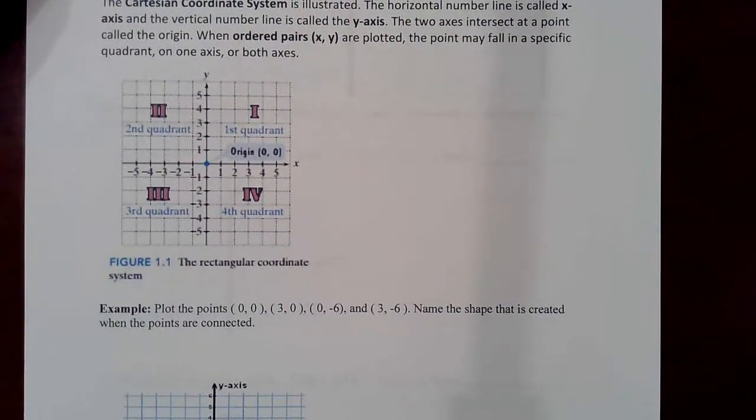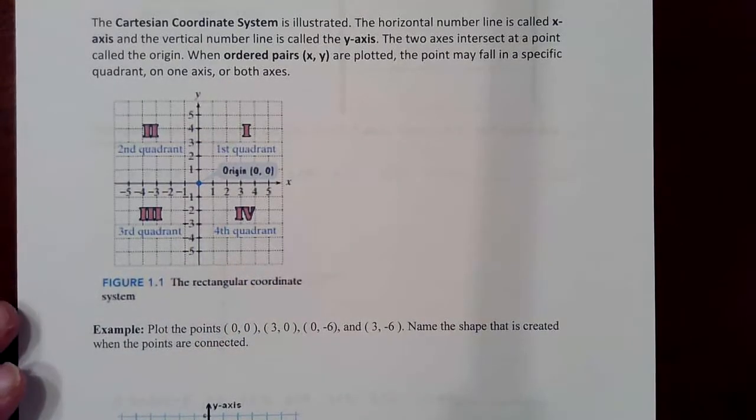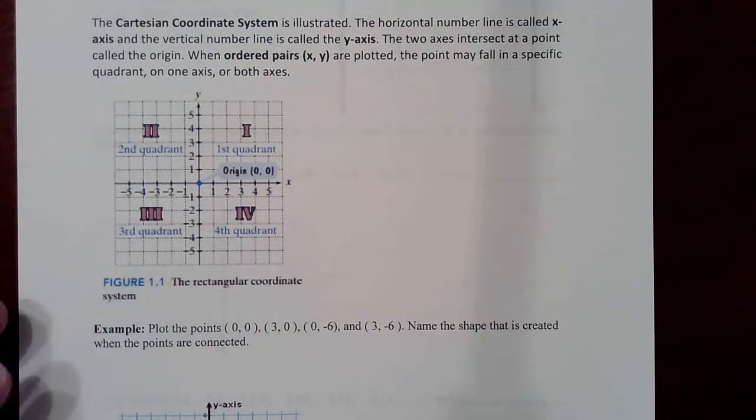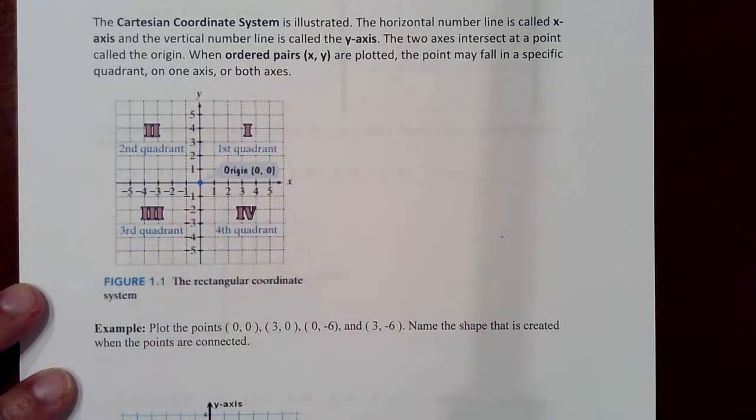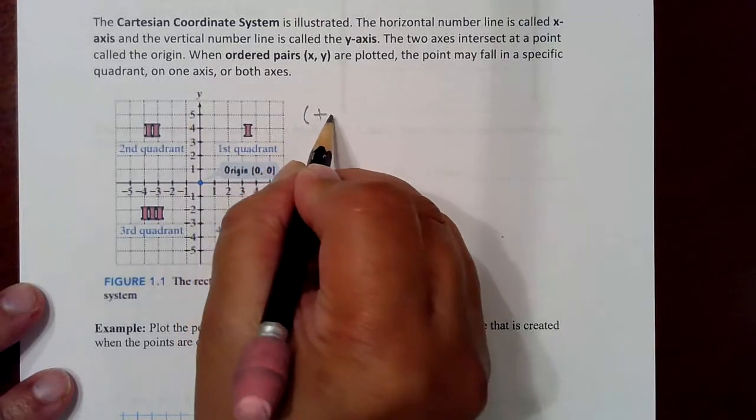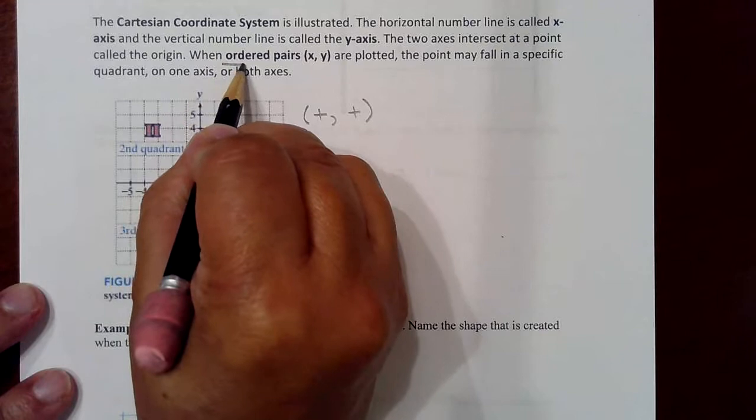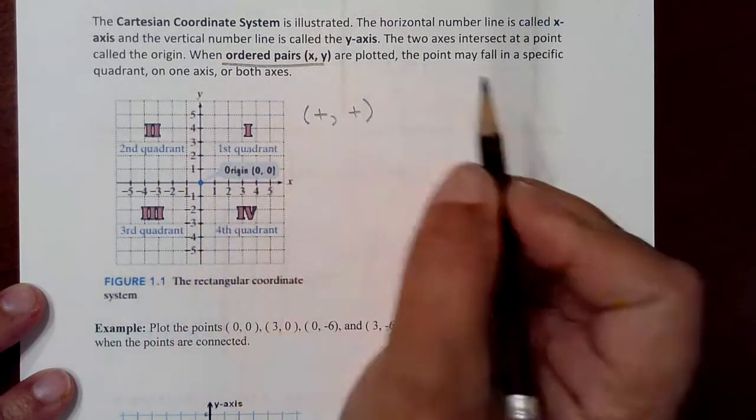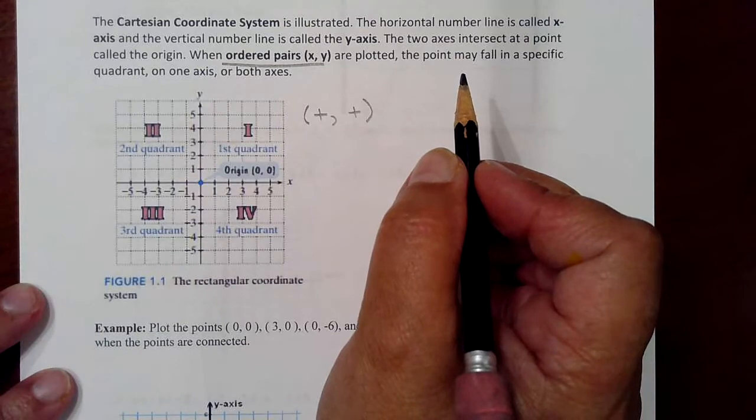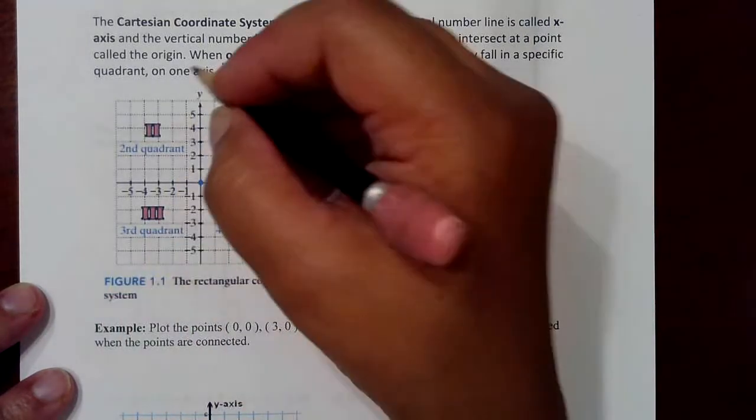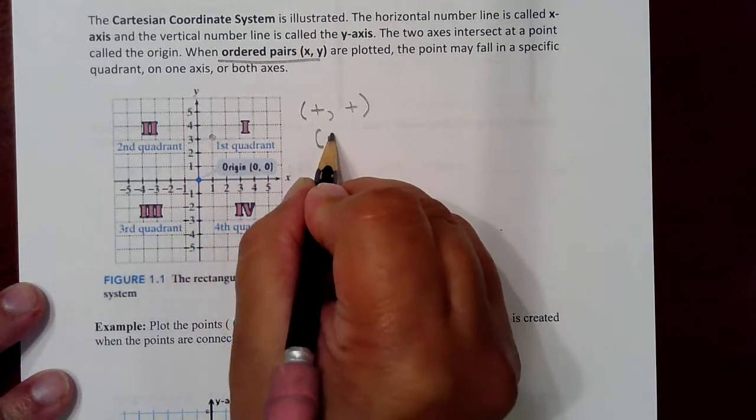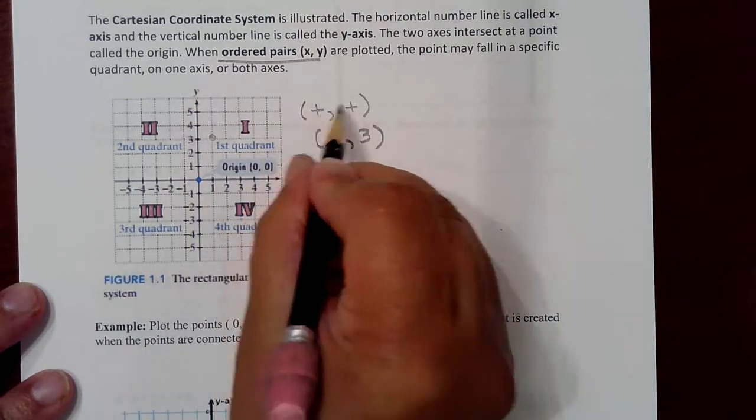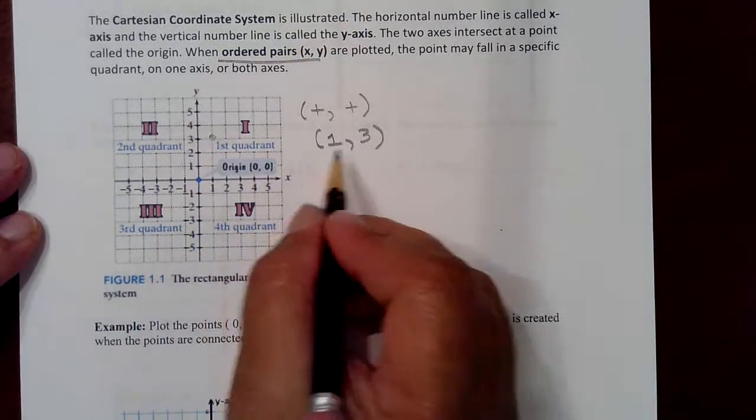So we start with a reminder that this is called the Cartesian coordinate system or the Cartesian coordinate plane. It consists of four quadrants. They are numbered going counterclockwise, and in the first quadrant you're going to notice that everything that you plot will have both a positive x and a positive y. Recall that when you name a point or plot a point, which are also called ordered pairs, you name the numbers in a specific order, hence the name.